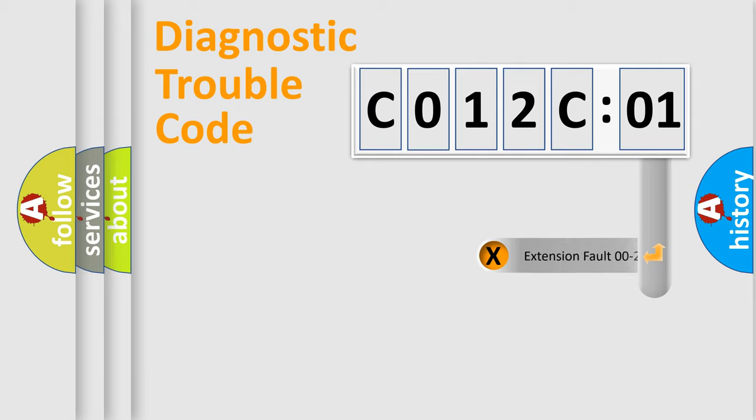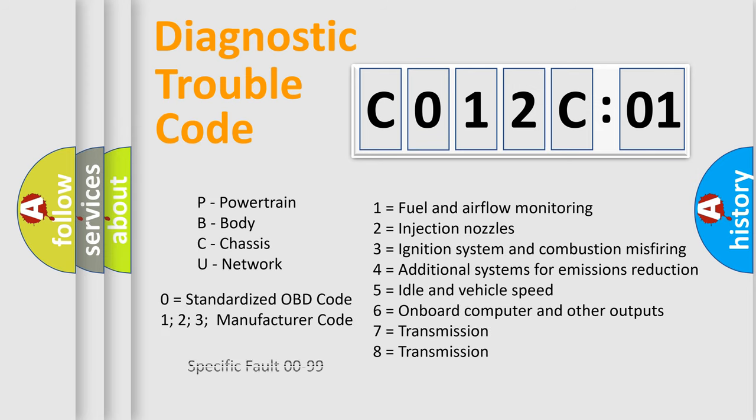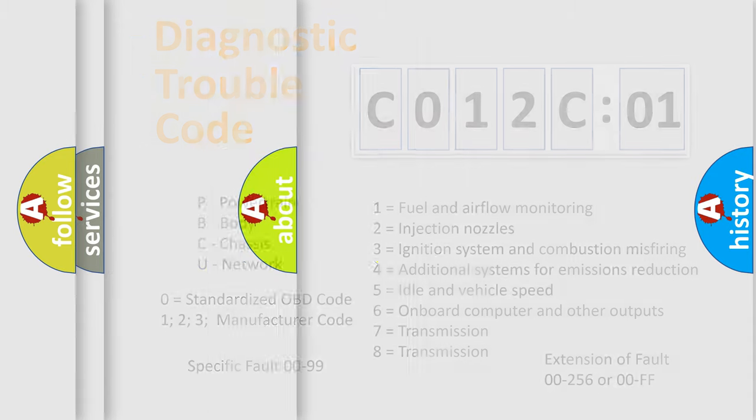The add-on to the error code serves to specify the status in more detail. For example, a short to the ground. Let's not forget that such a division is valid only if the second character code is expressed by the number zero.